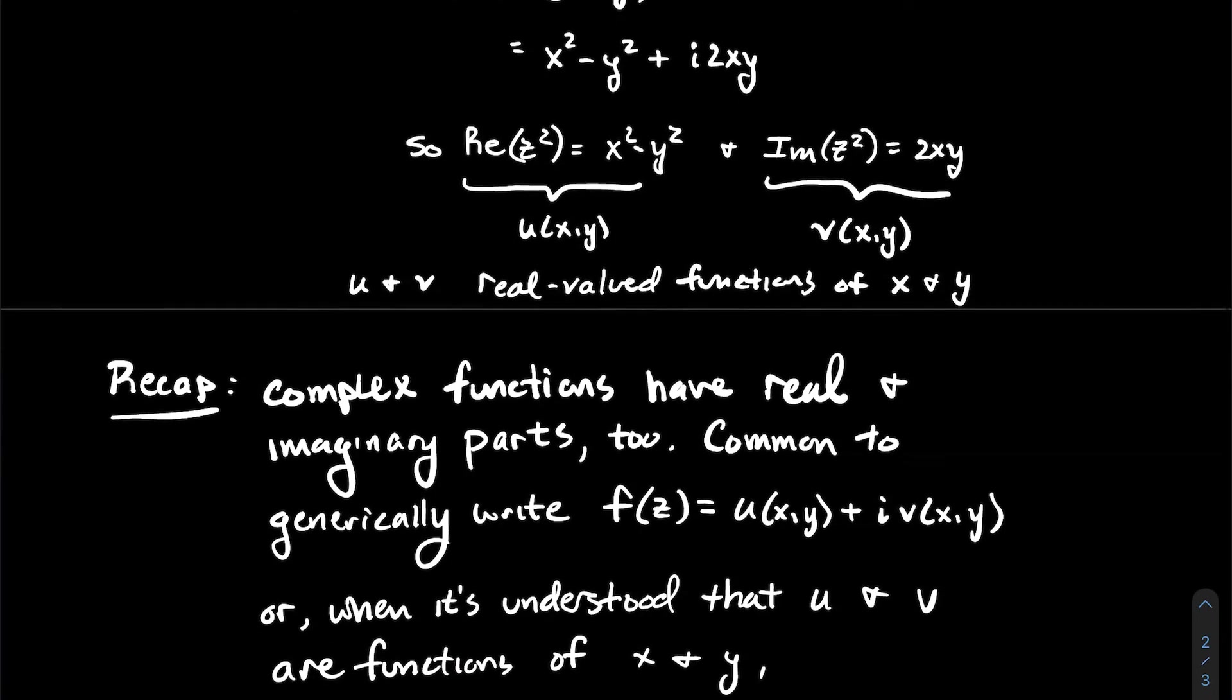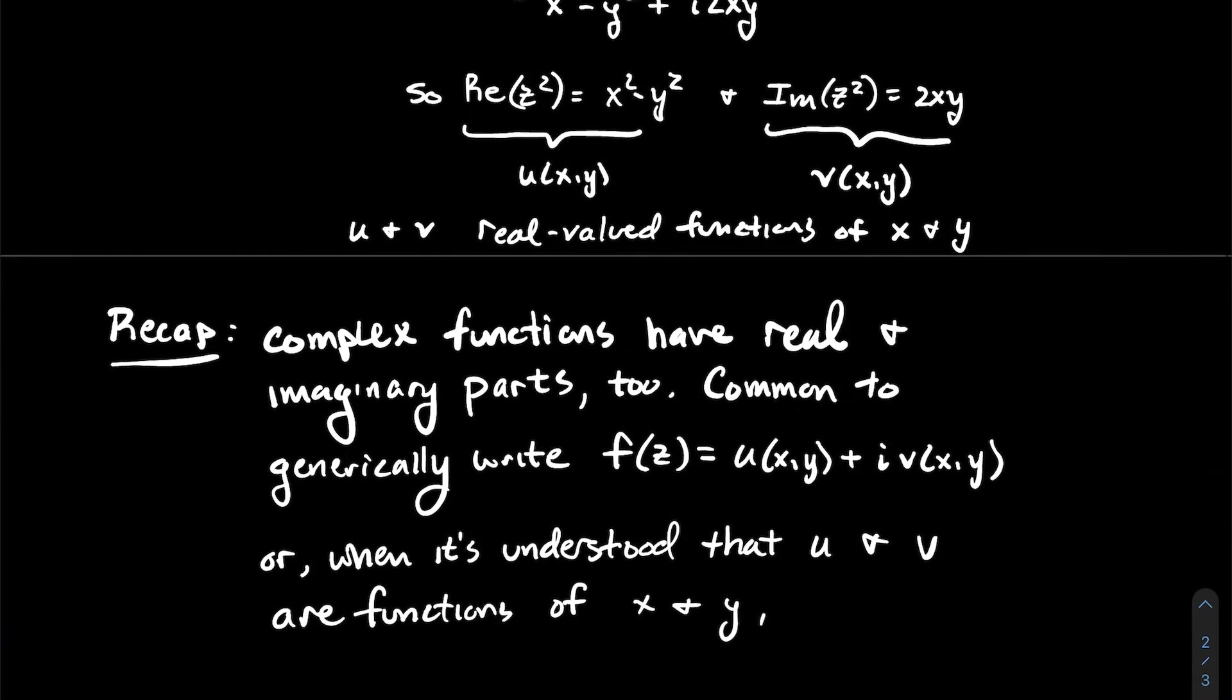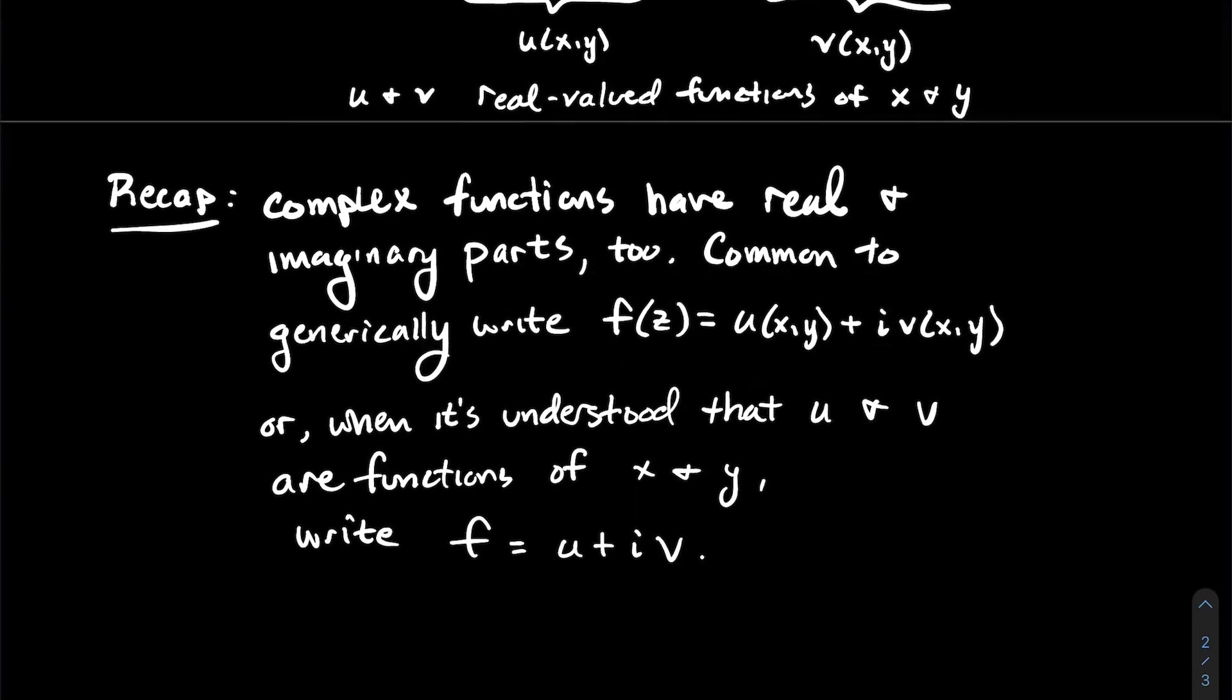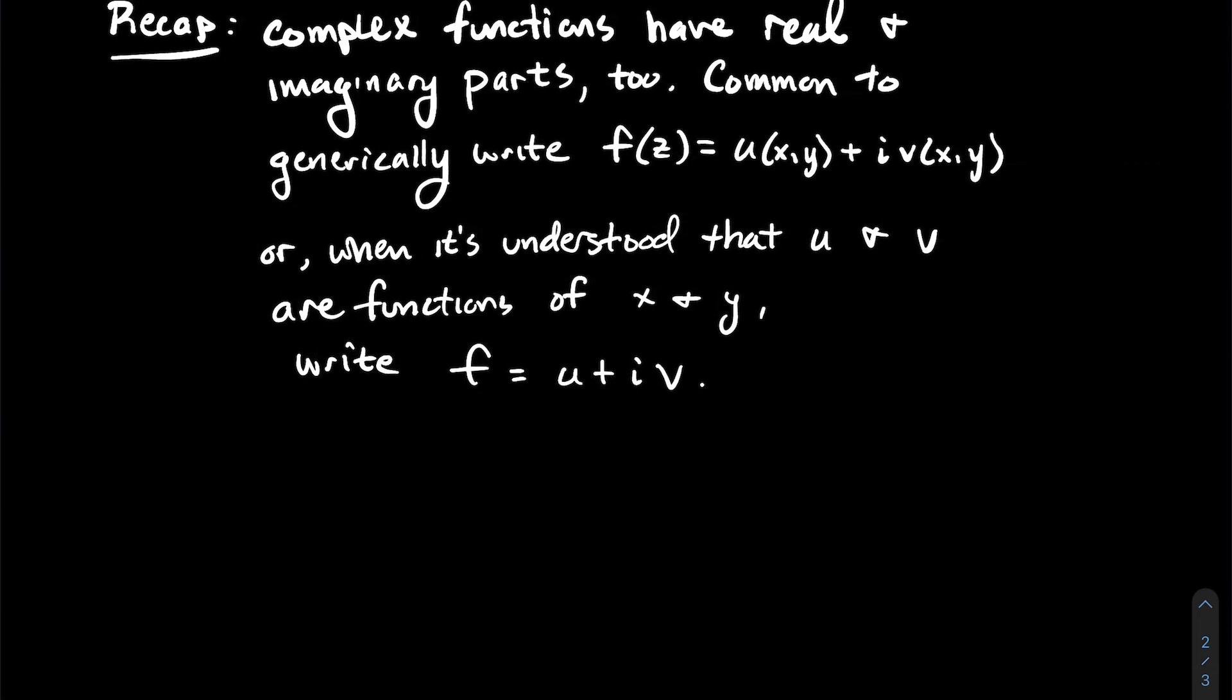And sometimes we use even less notation because we like to drop symbols and we can introduce a little brevity into the notation. So when it's understood that u and v are functions of x and y, then some authors or textbooks might just have f equals u plus iv. Or again, it's understood that f is a function of a complex variable z that has real and imaginary part x and y, therefore u and v are functions of those x and y's. So again, we want to be comfortable with all the different ways to write this notation down.